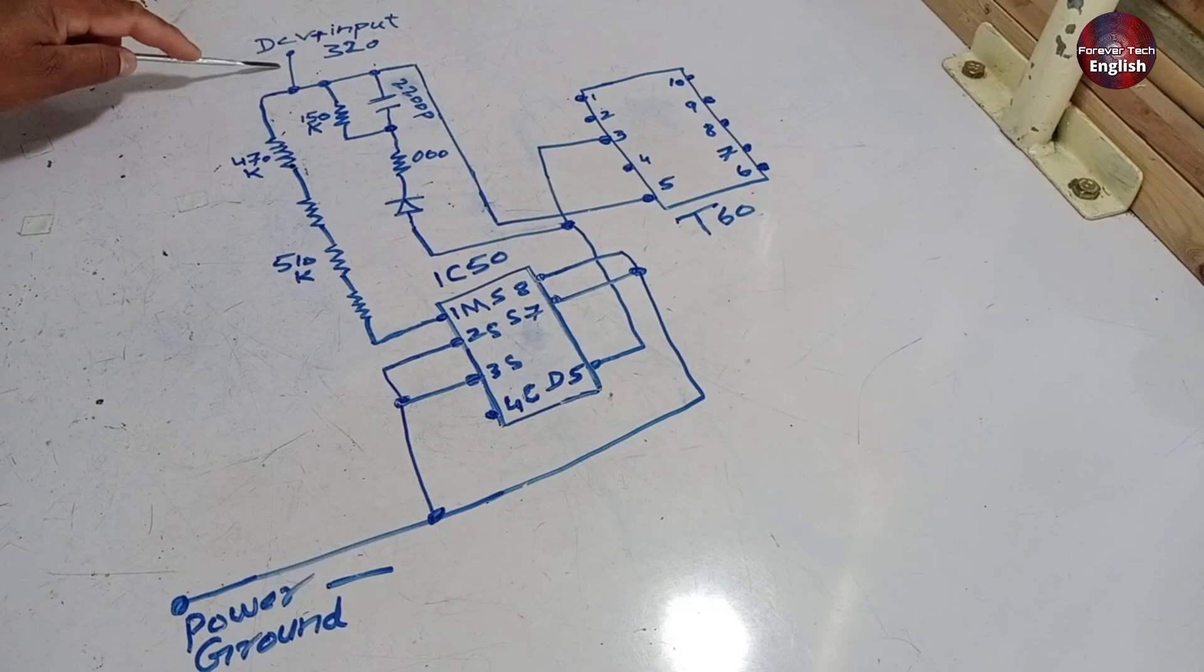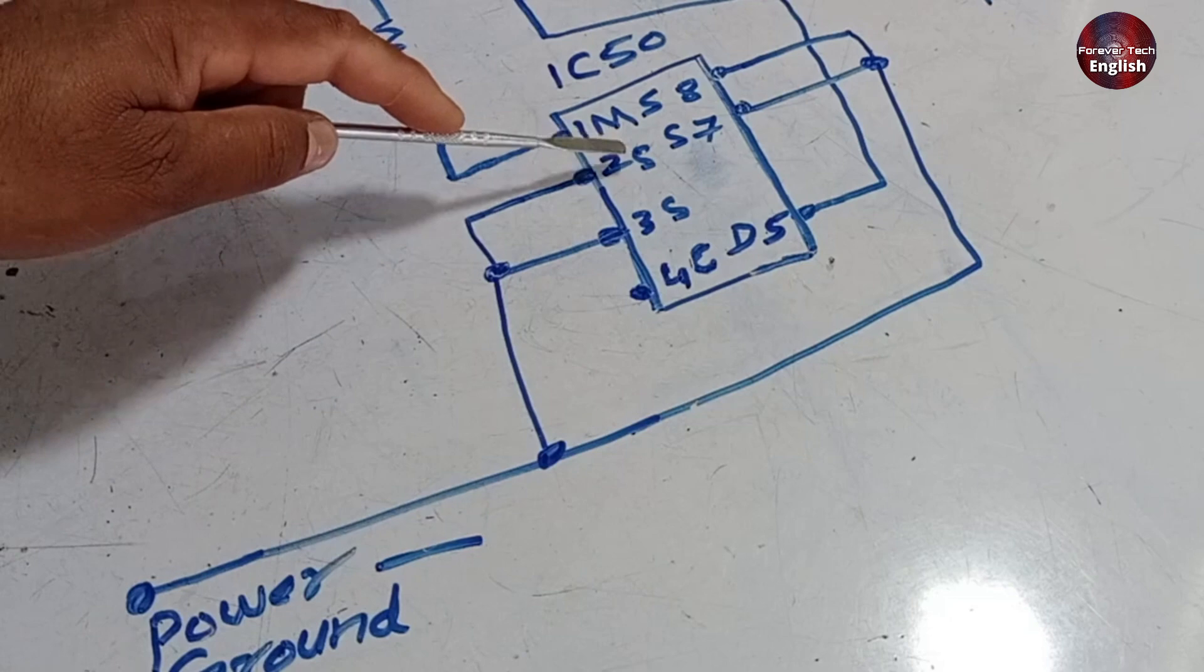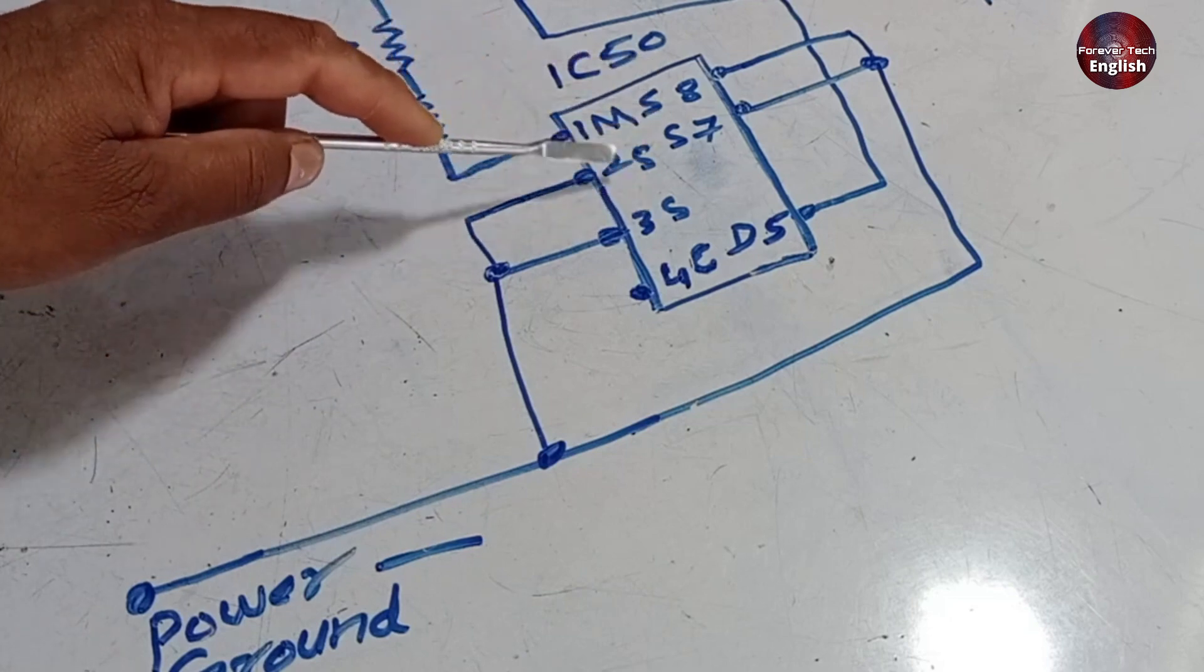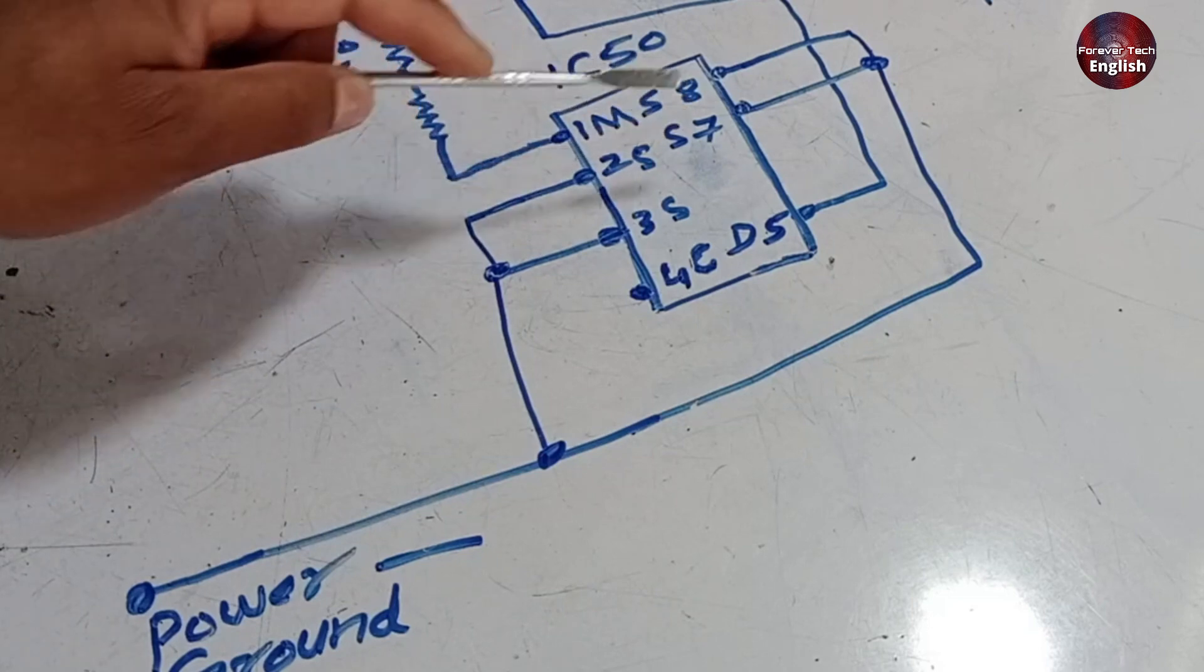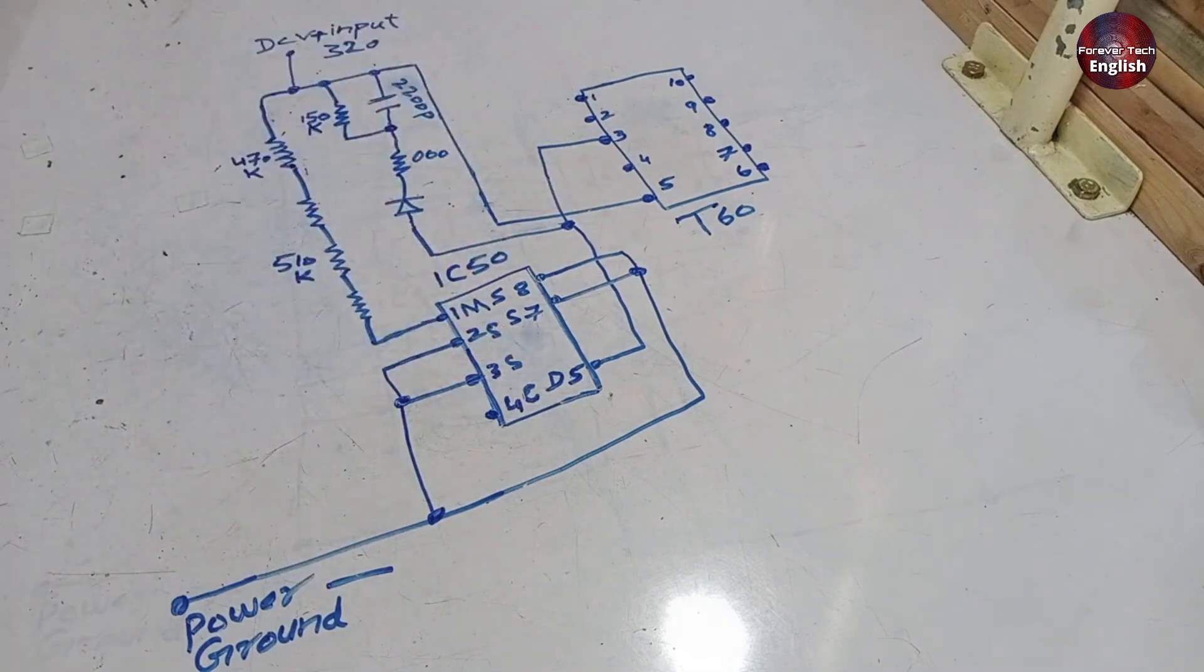We've given the 320 volts directly to the positive side of the chopper, but the negative side will go to the switching IC at all its source points. So which pins are its source points? Pins 2, 3, 8, and 7 are all source points. As soon as the switching IC turns on, it will complete the circuit through the drain. Now the high side is complete, so let's talk about the low side.